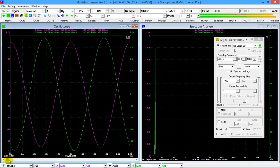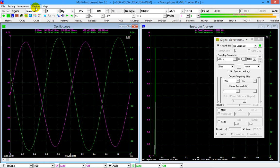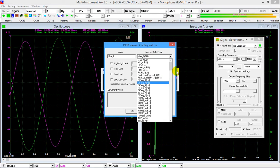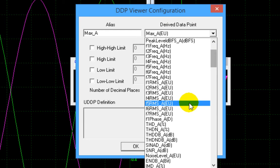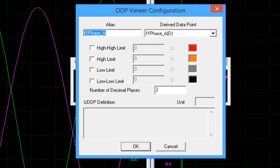Multi-Instrument is able to detect the initial phase of each captured sine wave through FFT in spectrum analyzer. We can display this initial phase through DDP viewer. Click the DDP viewer button on the toolbar. In the derived data point selection box, select F1 phase_A, give it a name, phase of channel A.